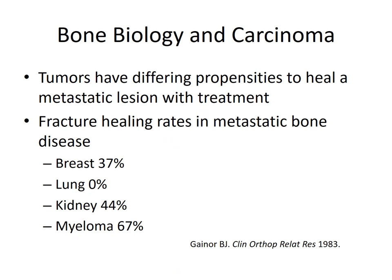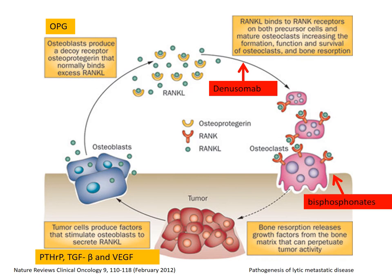In considering which patients to operate on, understanding bone biology and carcinoma is important. Different tumors have differing propensities to heal. Patients may present with only one bone lesion while others may have multiple, and disease may be more easily treated in some settings. Lung cancer has a poor rate of healing, whereas myeloma and lymphoma have a significantly better propensity to heal. These numbers are historical from the 1980s — currently patients live much longer with metastatic disease due to targeted therapies and better bisphosphonate treatment, so consideration must be given for all of this when determining aggressiveness of treatment.